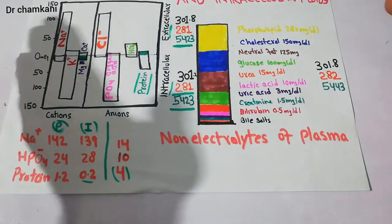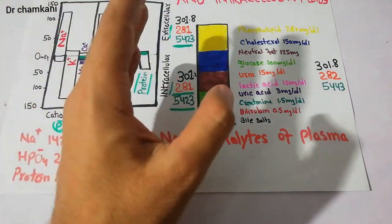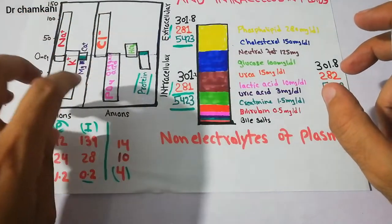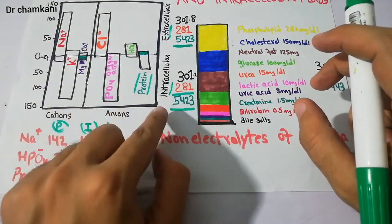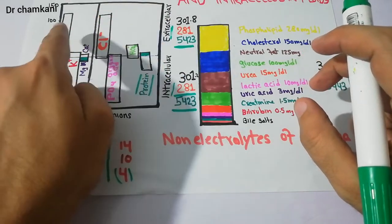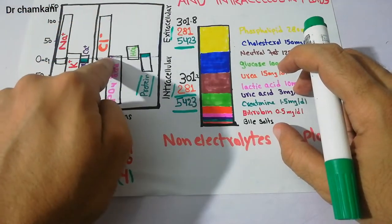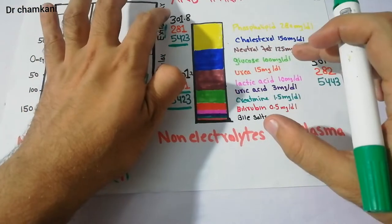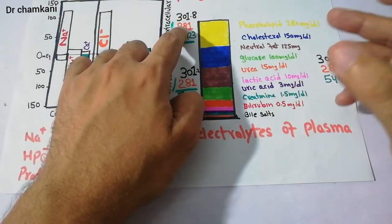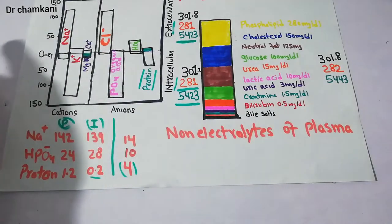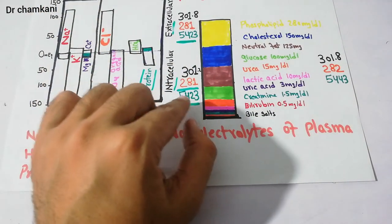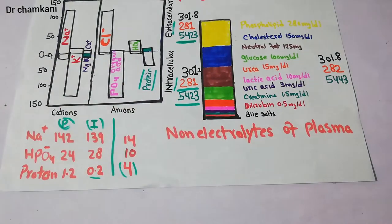So it was a simple lecture about the calculation of osmolarity and osmotic pressure in different body fluid compartments. The main important substance for the intracellular fluid compartment is potassium, and for the extracellular fluid compartment it is sodium and chloride. Once we know the osmolarity, we can apply the coefficient factor to get the corrected osmolarity, and then use that to calculate osmotic pressure. Thanks for watching.